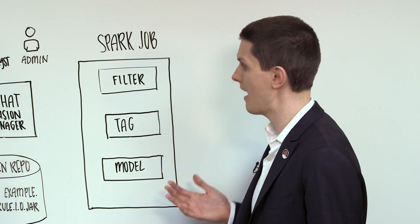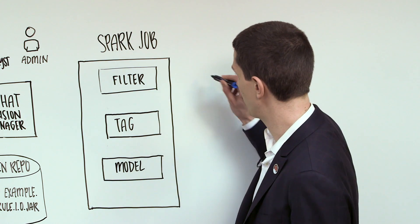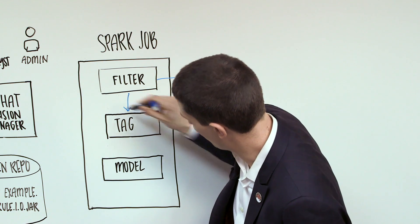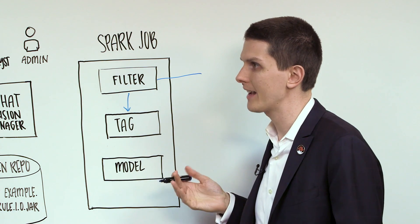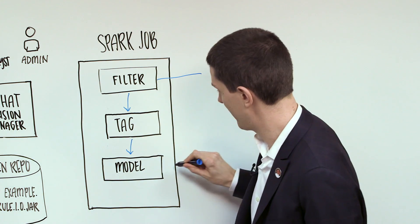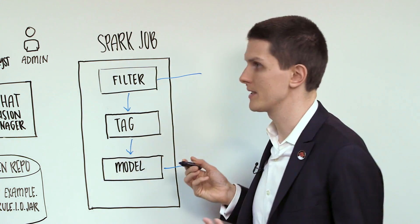So John, I already have a Spark job that I can bring in data and run it through some filters. And then I can run it through some proprietary business logic that tags the bad looking transactions. And then I run it through an AI model that then spits out some useful business data.